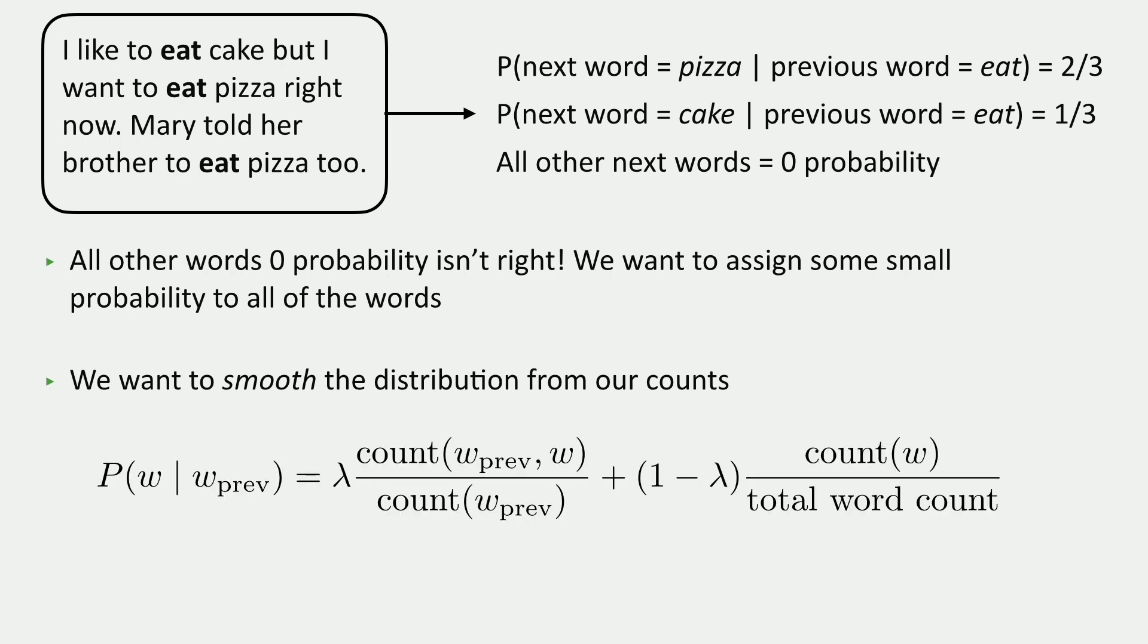And we do that by way of this somewhat complicated-looking formula. We're going to break it down here. We say that the probability of w given w prev is lambda times this count of w prev comma w over count of w prev. So that's just what we had before. And then we add one minus lambda times the count of w over the total number of words that we see.